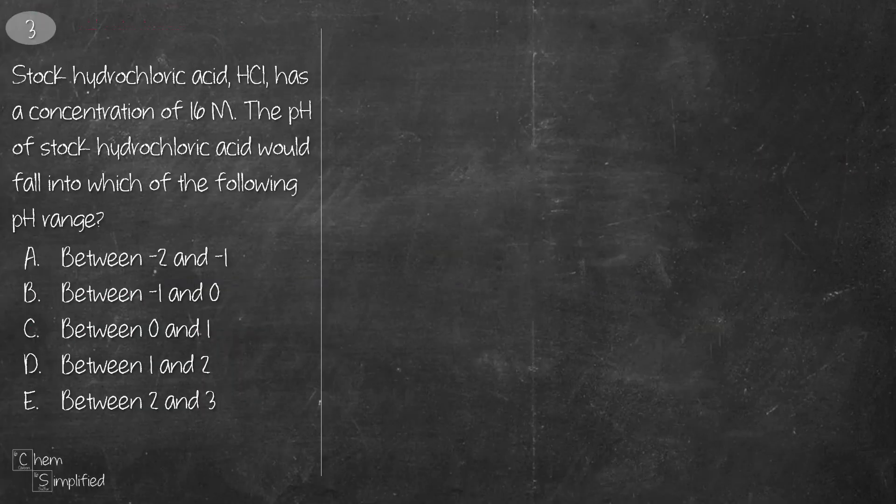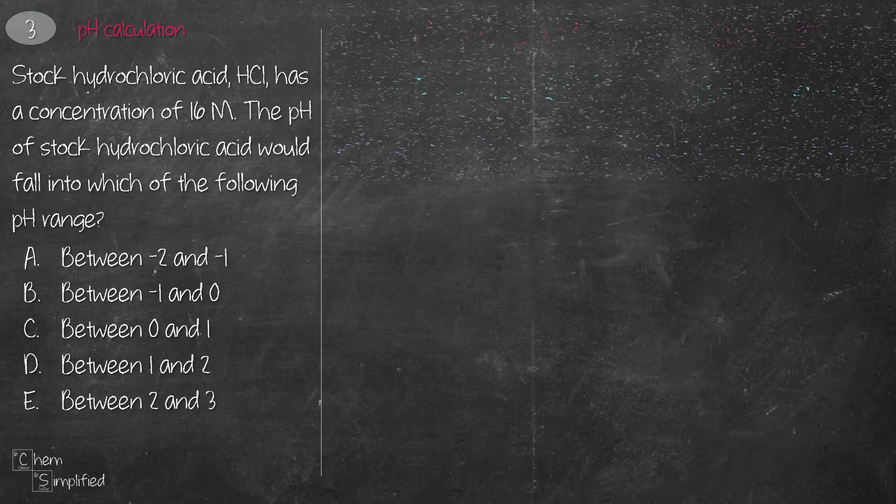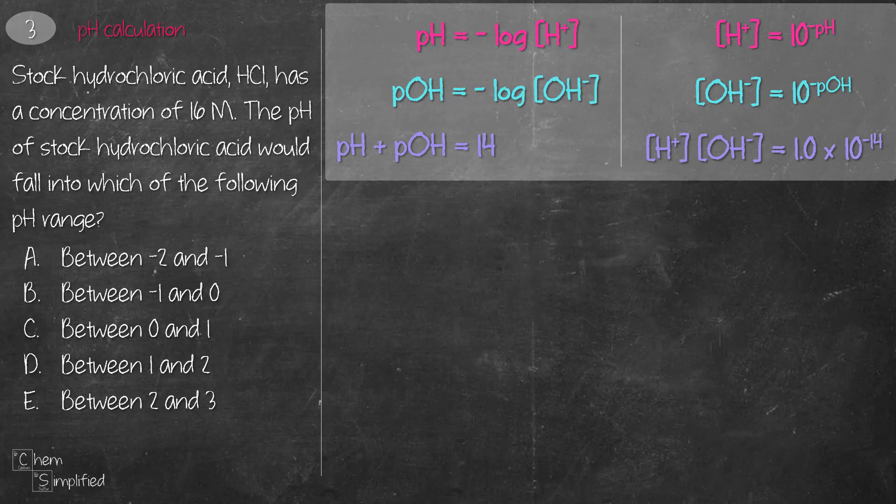This next question involves pH calculation. These are the six equations that are handy. However, we don't need all six of them, we only need one of them, which is pH equals negative log of H+. And the reason we know that we need that equation is because the question is asking for pH, and it's giving us the concentration of H+, which in this case is 16 molar. So we plug that into the formula, and that gives us negative 1.2.